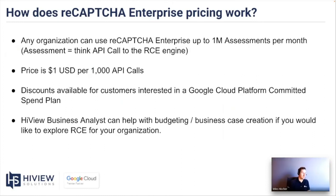How does ReCAPTCHA Enterprise pricing work? Any organization can use ReCAPTCHA Enterprise and self-service up to 1 million assessments per month — think of an assessment as an API call to the ReCAPTCHA engine. Beyond that, pricing is $1 per 1,000 API calls. Discount plans for larger customers are available if you are interested in a Google Cloud commitment plan. Highview Solutions has a business analyst team that can help with budgeting or creating a business case.